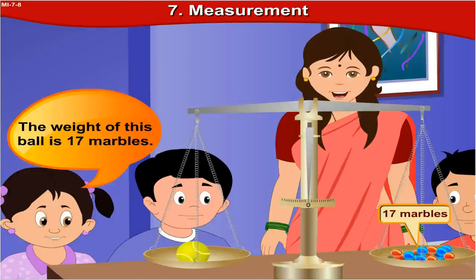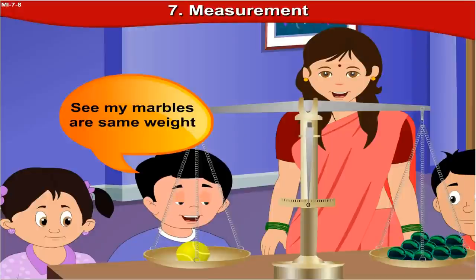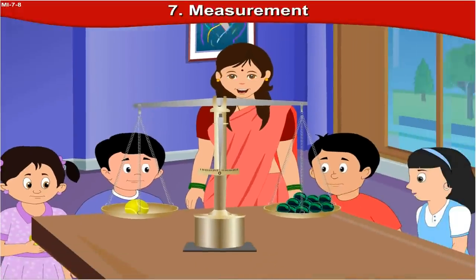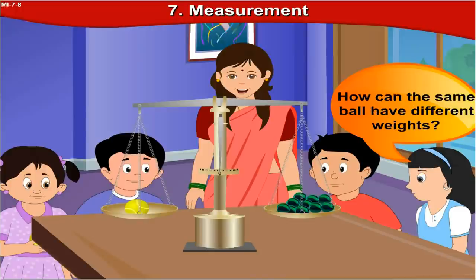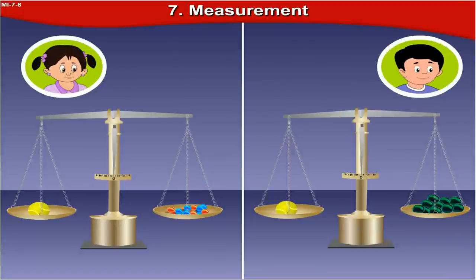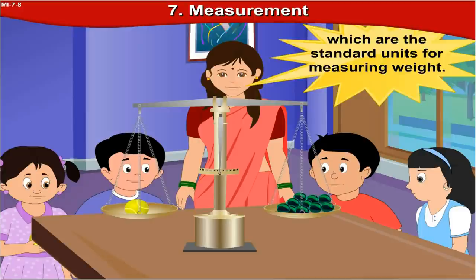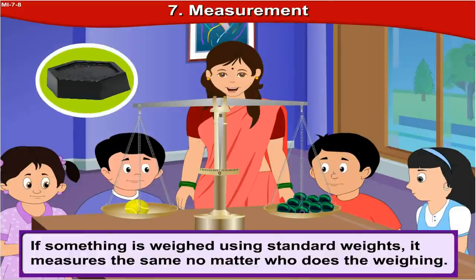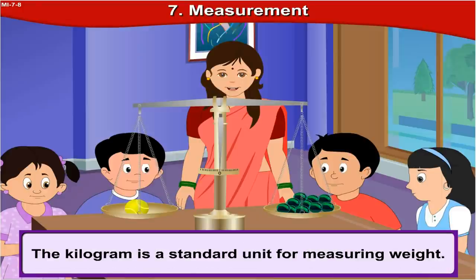The weight of this ball is 17 marbles. But I have different kinds of marbles — the same ball weighs 10 of my marbles. How is that possible? How can the same ball have different weights? The marbles Sonu brought were smaller than the marbles Nando brought, and that's the reason for this confusion. That's why shops keep weights, which are the standard units for measuring weight. If something is weighed using standard weights, it measures the same no matter who does the weighing. The kilogram is the standard unit for measuring weight.